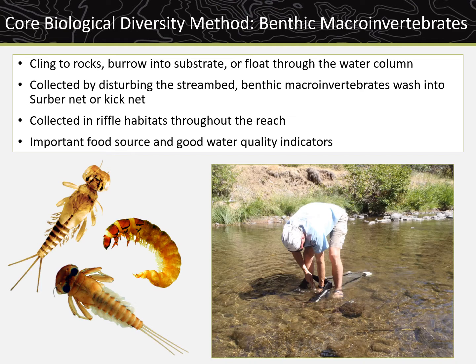The core biodiversity and riparian condition methods implemented at Lotic AIM reaches are benthic macroinvertebrates and riparian vegetation. Benthic macroinvertebrates cling to the rocks and cobbles or burrow into substrate and are collected by disturbing the stream bed and letting the bugs wash into a sieve or kick net. Invertebrates are collected in riffle habitats throughout the reach. If no riffles are present, invertebrates are collected at every transect using the reach-wide approach and a kick net. Macroinvertebrates are important because they are a food source for fish and other organisms and are good water quality indicators.